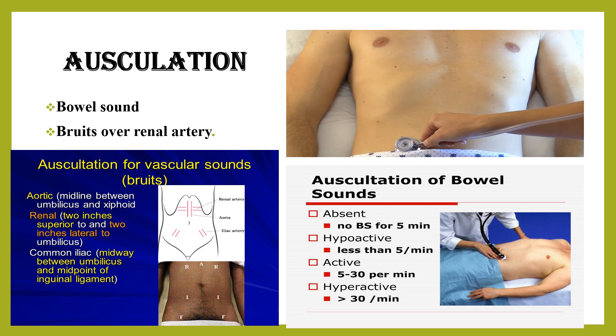Bowel sound classification: absent if no sound for five minutes; hypoactive if less than five per minute; normal active if five to thirty per minute; hyperactive if greater than thirty per minute. The other component of auscultation is for vascular sounds — aortic, renal, and common iliac. Aortic auscultation is at the midline between the umbilicus and the xiphoid. Renal artery auscultation is two inches superior to and two inches lateral to the umbilicus. Common iliac auscultation is midway between the umbilicus and the midpoint of the inguinal ligament, as shown in the image.